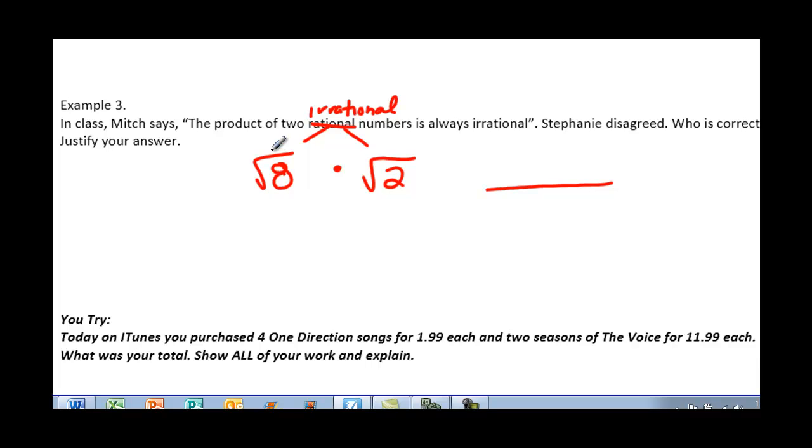So square root of 8 times the square root of 2 is going to give us the square root of 16. Now we know that the square root of 16 is 4. And that 4 is now a rational number. So Mitch is actually going to be wrong. Okay. So Stephanie would be correct because she's the one who disagreed. And to justify our answer, well, here's some work. When we take two irrational numbers and we multiply them together, my answer is now rational.